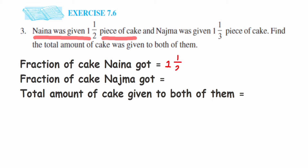The fraction of cake Naina got is one and one-half. We're going to convert this into an improper fraction. Multiply one and two, then add the result: one times two is two, two plus one is three, so we get three upon two.